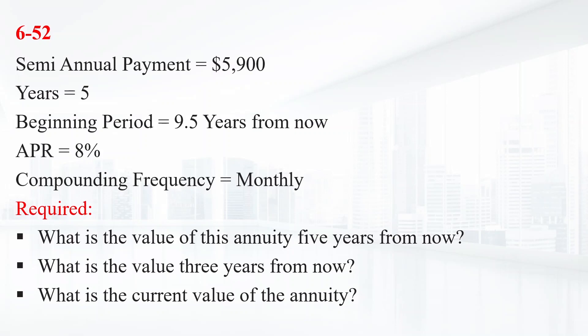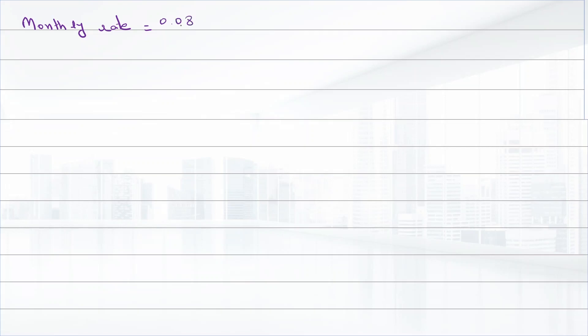The cash flows in this problem are semi-annual, so we need the effective semi-annual rate. The interest rate given is the APR, so the monthly rate will be eight percent divided by 12 — that is 0.00667.